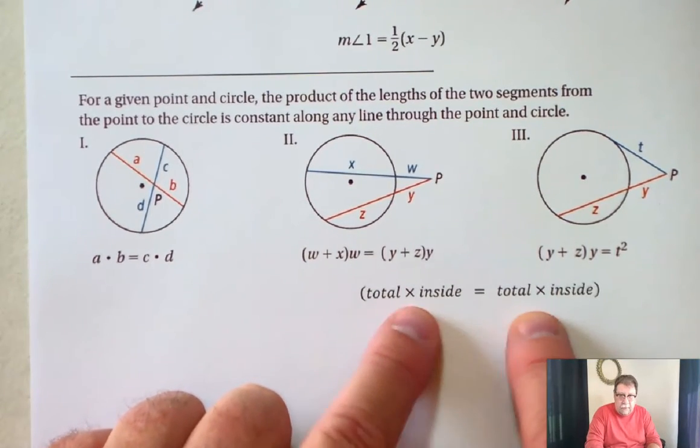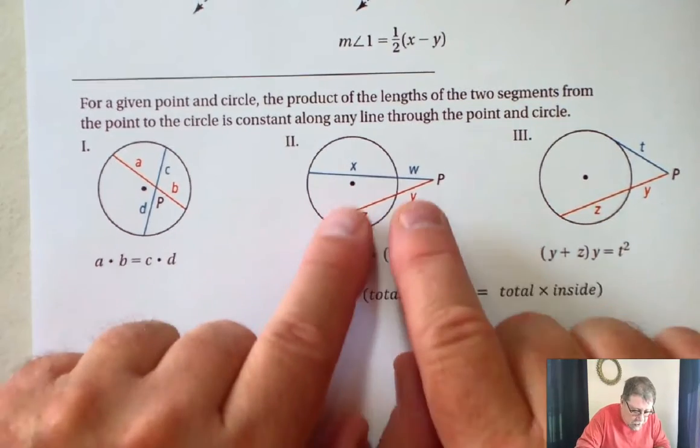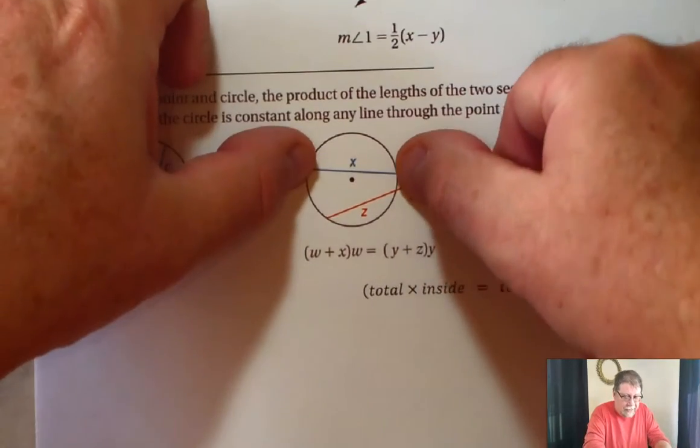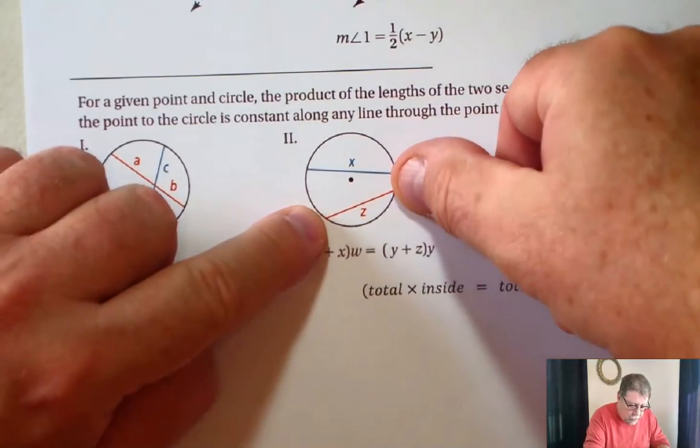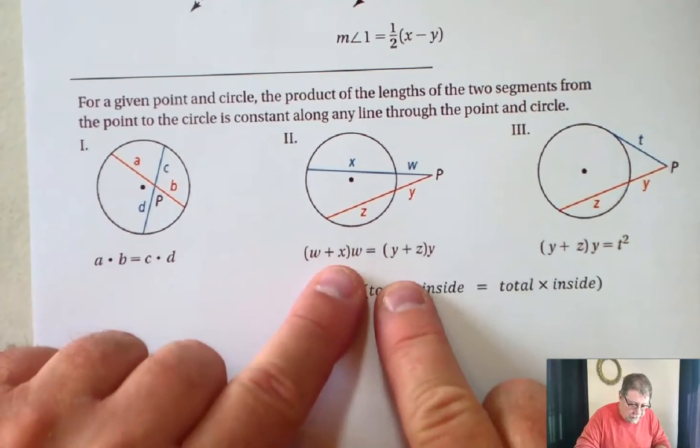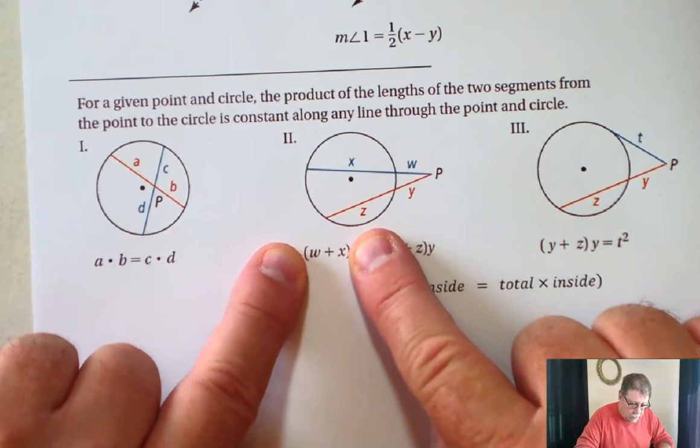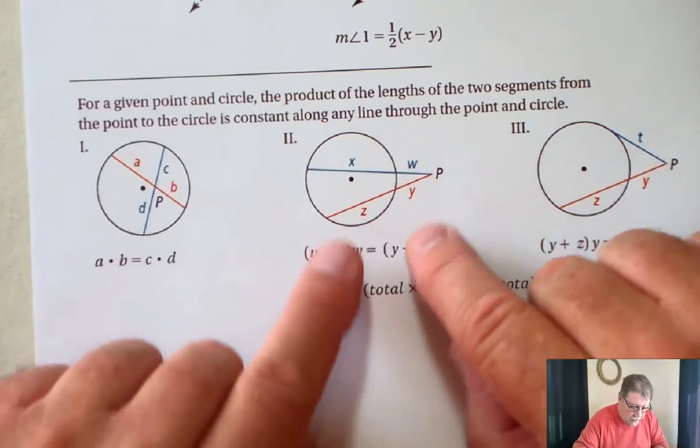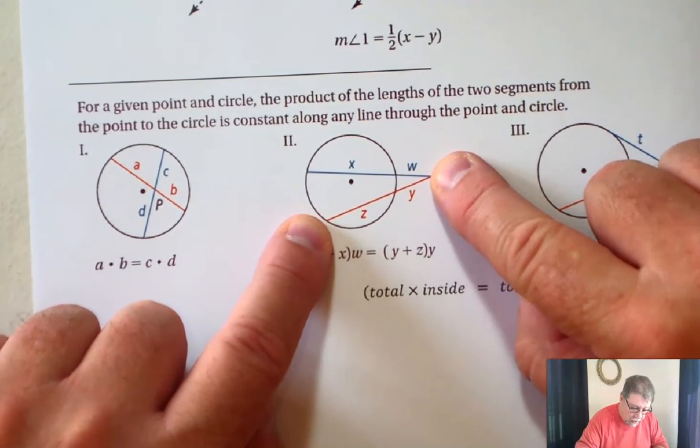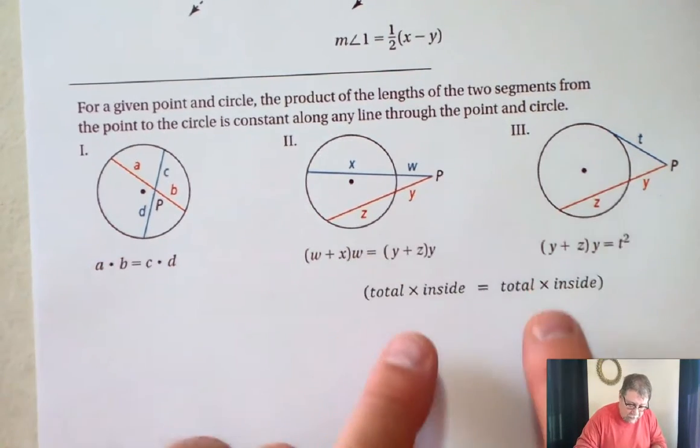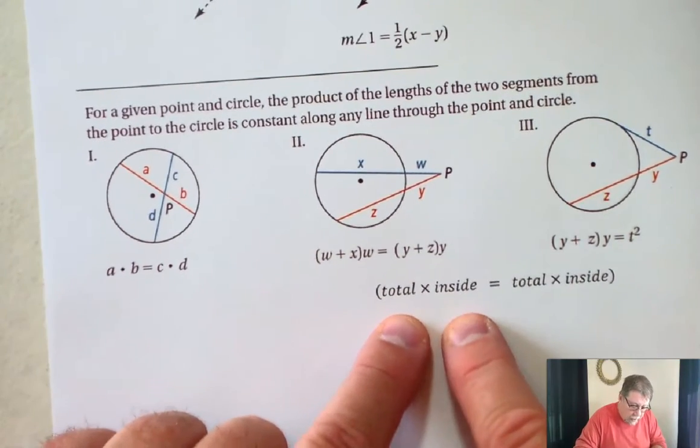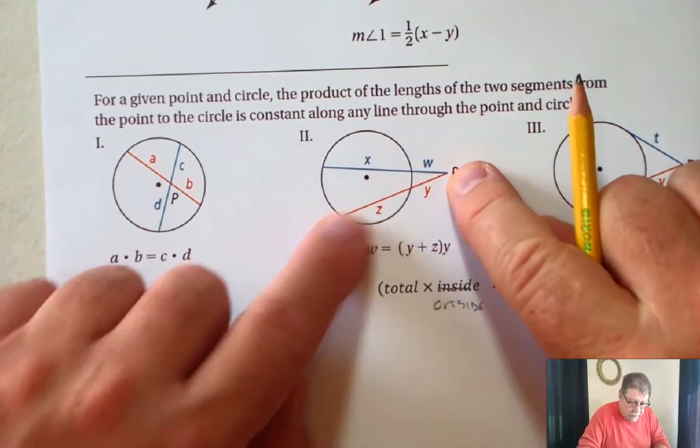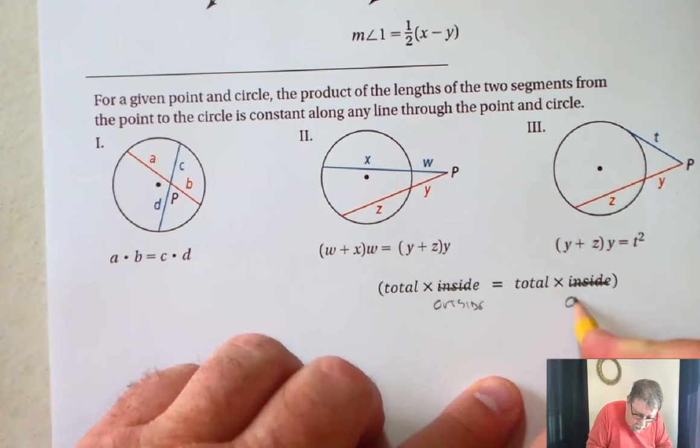These two, I like to use this formula for both of these. So if you think of it, we have a segment, a secant line that's going through. So there's a part that's inside the circle, there's a part that's outside the circle. Here there's a part inside, there's a part outside. What this formula says is X plus W, so that's the entire length, times W, which is the outside part, is equal to Y plus Z, which is the entire length, times the outside. And that's what I wrote here. The total length times the outside. The total length times the outside is equal to the total length times the outside.